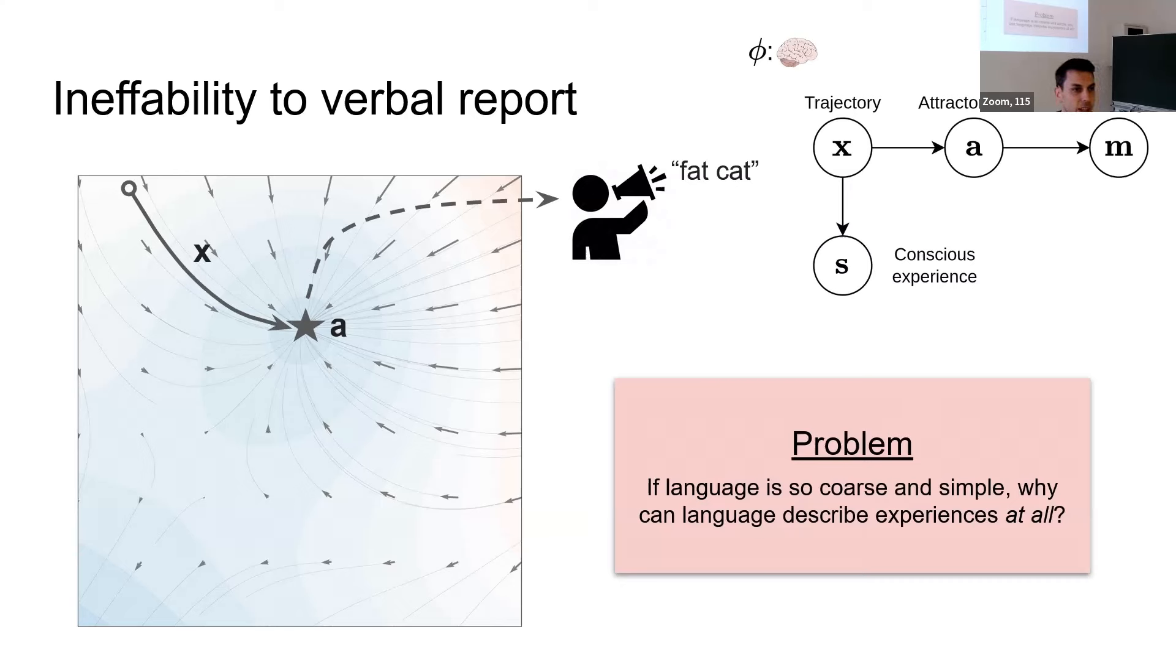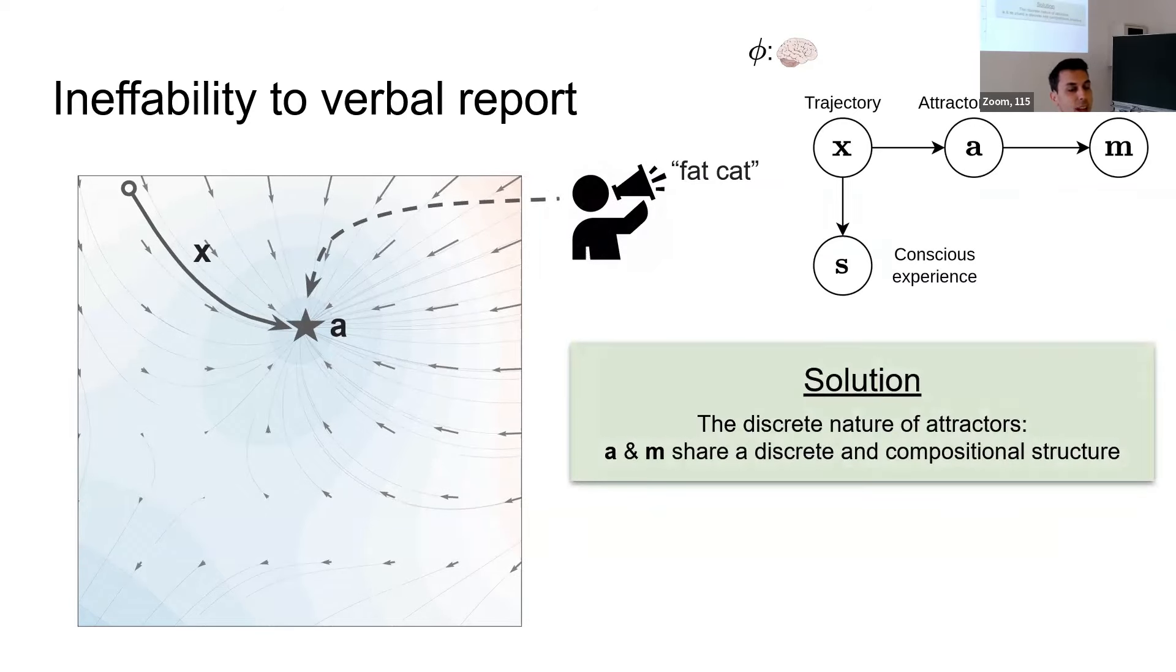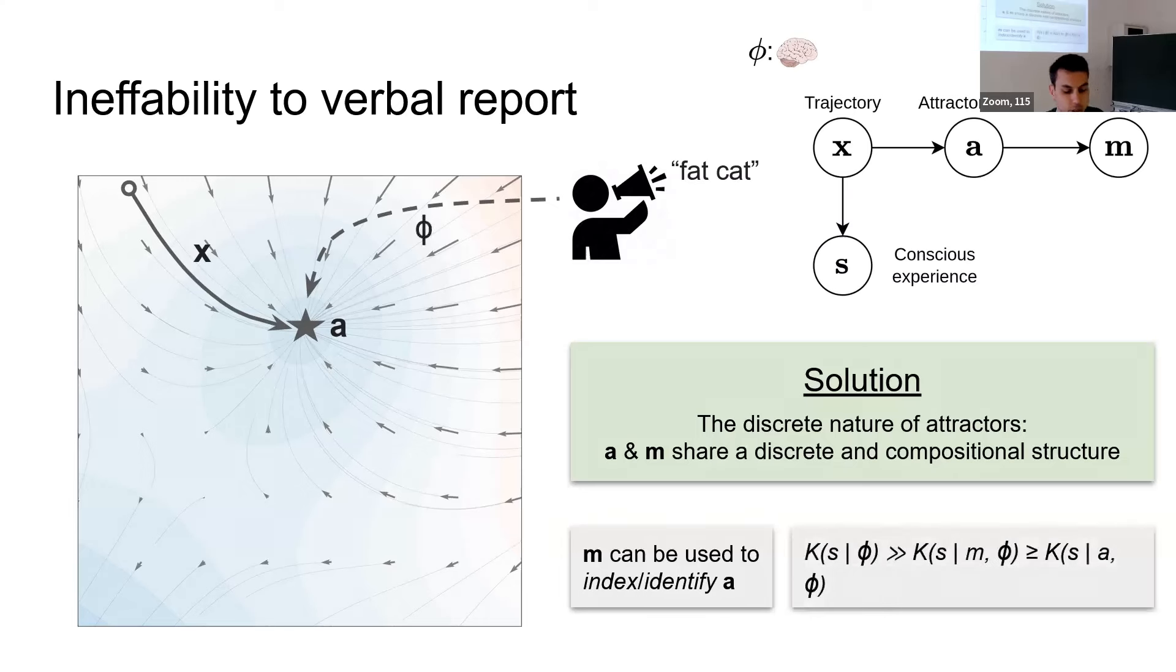Because the attractor, remember, it has this discrete part to it of you could label which attractor I'm in. Maybe I could assign some linguistic sentences to do that. And in fact, the attractors might have compositional structure such that I could label an attractor that I've never been in and the label is still valid in a sense. It still identifies the correct attractor. So M, you can think of it as it could be used to index or identify the attractor. It doesn't describe the continuous parts, but as long as I have the parameters of someone's brain, I could probably decode from the message and recover the attractor or a small set of them so the information loss is not immense, basically, as long as you have the parameters, though.